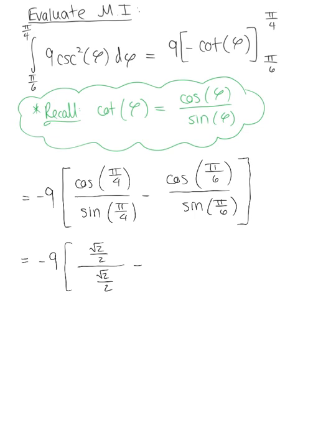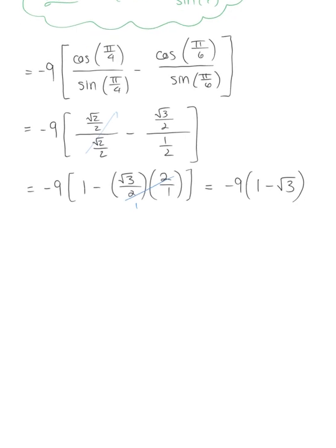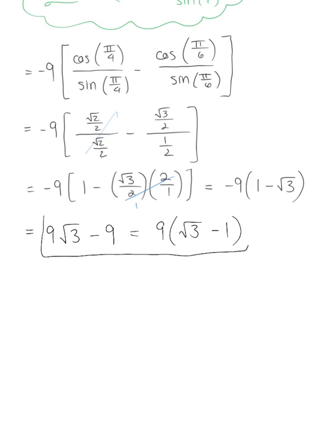Evaluating at pi/6, cosine(pi/6) gives us root 3 over 2, all divided by 1/2. Fractions in the denominator flip, so we have negative 9 times (1 minus root 3 over 2 times 2), and the 2s cancel, leaving negative 9 times (1 minus root 3). Distributing, this can be rewritten as 9 times (root 3 minus 1), or 9(root 3 minus 1). All three equivalent forms are correct.